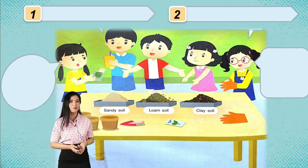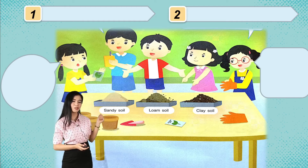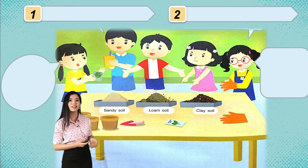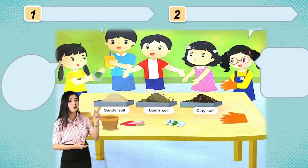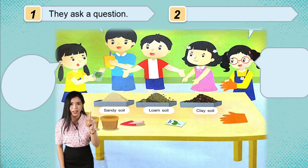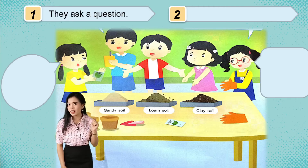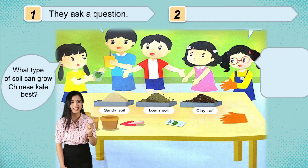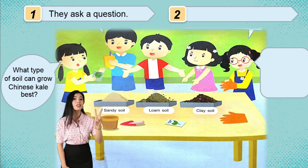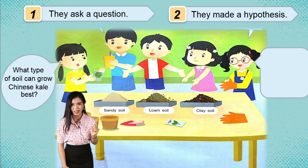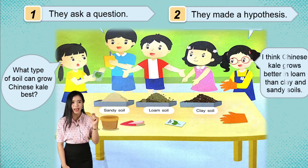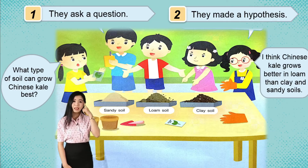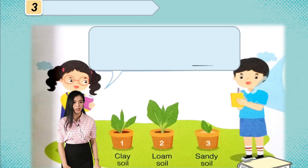For example, Keng and friends want to know the best type of soil to grow Chinese kale. Together they made use of the scientific method. The first step: they asked a question — 'What type of soil can grow Chinese kale best?' The second step: they made a hypothesis — they thought that Chinese kale grows better in loam than in clay and sandy soil.